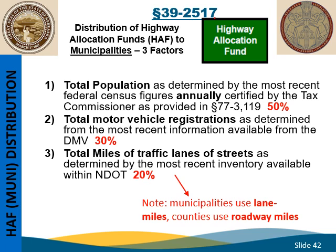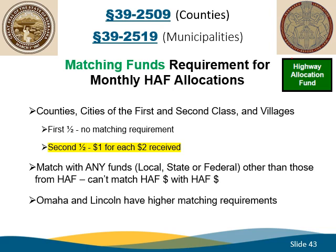Previously, the local matching requirement was mentioned as related to the Highway Allocation Fund's distributions. For counties, cities of the first class, cities of the second class, and villages, the first half of the Highway Allocation Fund's distributions have no matching requirement. The second half is required to be matched $1 for every $2 received. Local funds can be used to match Highway Allocation Funds, or it could be from other sources — federal or state, including buyback funds. You cannot use Highway Allocation Funds to match Highway Allocation Funds. An example would be State Aid Bridge Funds, which come from the Highway Allocation Fund. Incentive payments are taken off the top of the Highway Allocation Fund, and no local match is required for those funds.